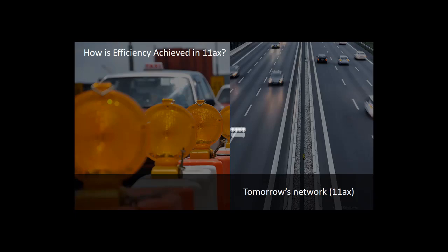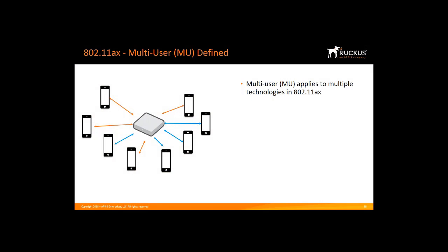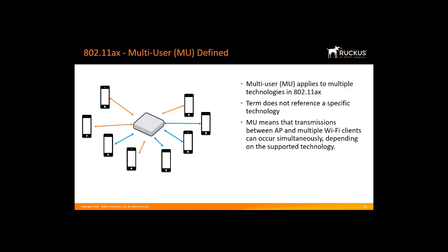Let's go into more detail on exactly how this is done using 11AX by defining some terms and concepts. Multi-user, or MU, applies to multiple technologies in 11AX, so it's important to understand that the term multi-user does not reference a specific technology such as multi-user MIMO. It means that transmissions between an AP and multiple Wi-Fi clients can occur simultaneously depending on the supported technology. 11AX defines the use of multi-user OFDMA, abbreviated MU-OFDMA, and multiple-input, multiple-output MU-MIMO technologies.